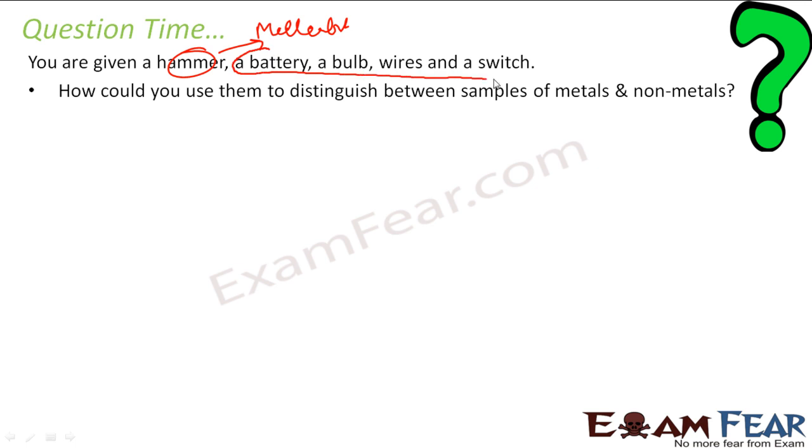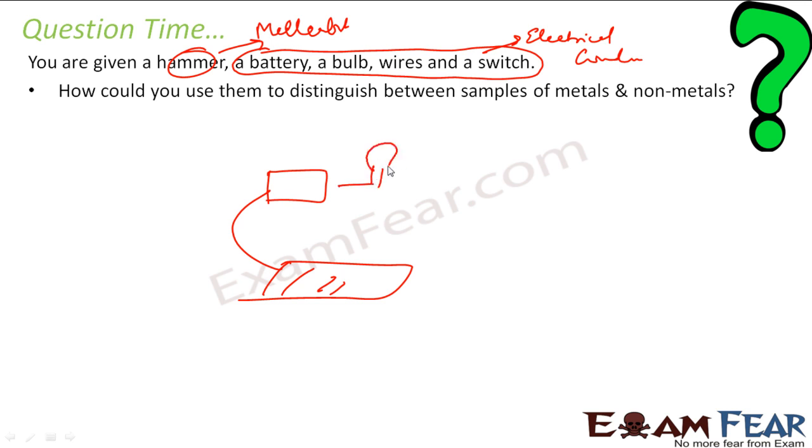The second thing, bulb, wire, switch. With this, I can check for electrical conductivity. So I have some metal like this. I can put this metal like this. I will put a battery. I will put a bulb. This wire is there and there is a switch. So with this, I can check whether this particular metal or this particular sample will conduct or not. So if it glows, that means it is a metal. Because metals are good conductor of electricity. So with these two properties, malleability and electrical conductivity, I can tell whether the sample is metal or not. Because the first hammer I will use for malleability and battery, bulb, wire, and switch are used for electrical conductivity.